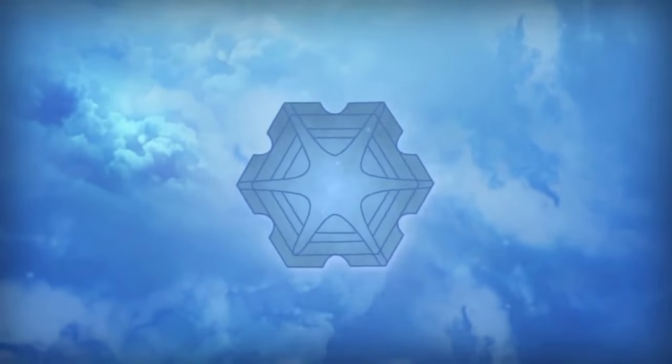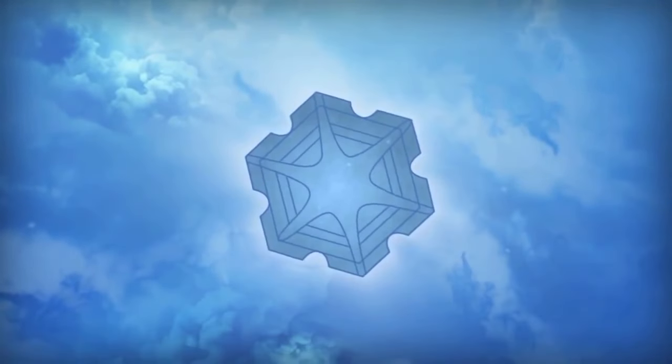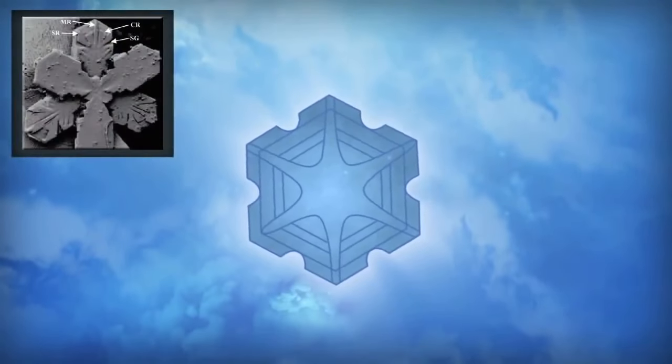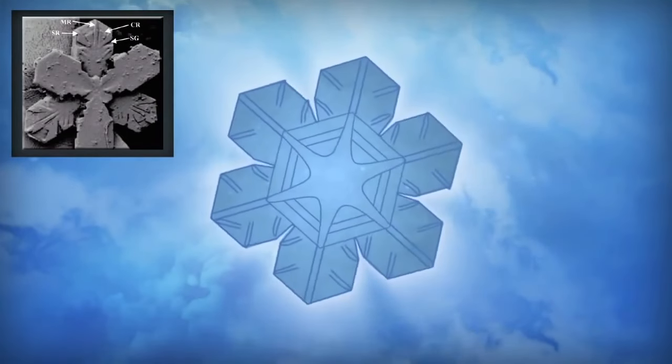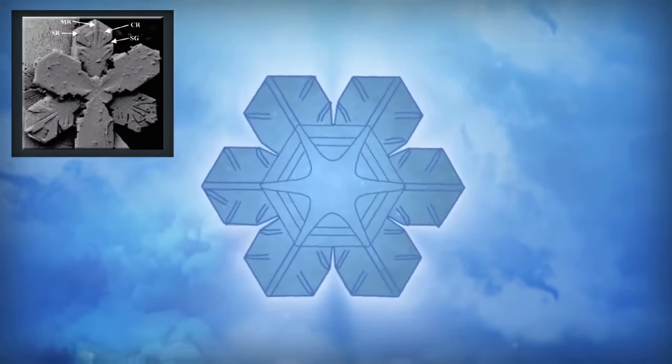The lines in each branch are due to ridges and grooves on the surface. These six branches form the corners of a hexagon which forms into this shape because the water molecules chemically bond into a hexagonal network.